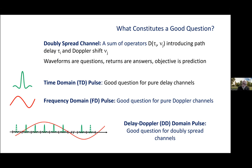And we're interested in predicting the action of a doubly spread channel on a waveform. What should the waveform be? What's the right question to ask? What constitutes a good question if our objective is prediction? Well, the green time domain pulse, that's a good question for pure delay channels.